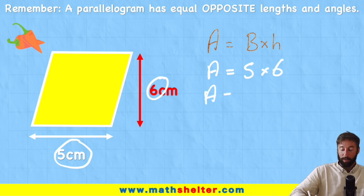So area equals 5 times 6 which is 30. What measurement we work in, that's right, centimetres squared.